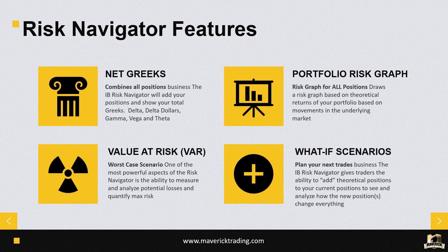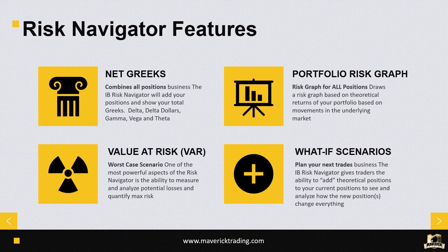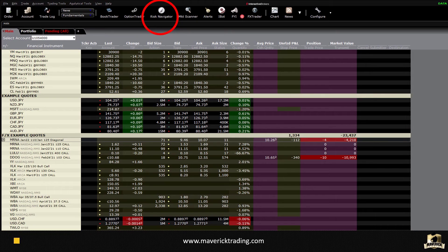The first three features are pretty standard. The last one — what-if scenarios — is where you'll really nerd out. You can say: what if I added this position to my portfolio? How would that change my Greeks, my portfolio risk graph, my VaR? Or you can build a blank portfolio with 10 trades and see what it looks like. It's very helpful for new options traders to put in a trade and explore: what if I did two contracts, three, or seven? What if I did three longs and one short? You can really play with your overall portfolio risk graph.